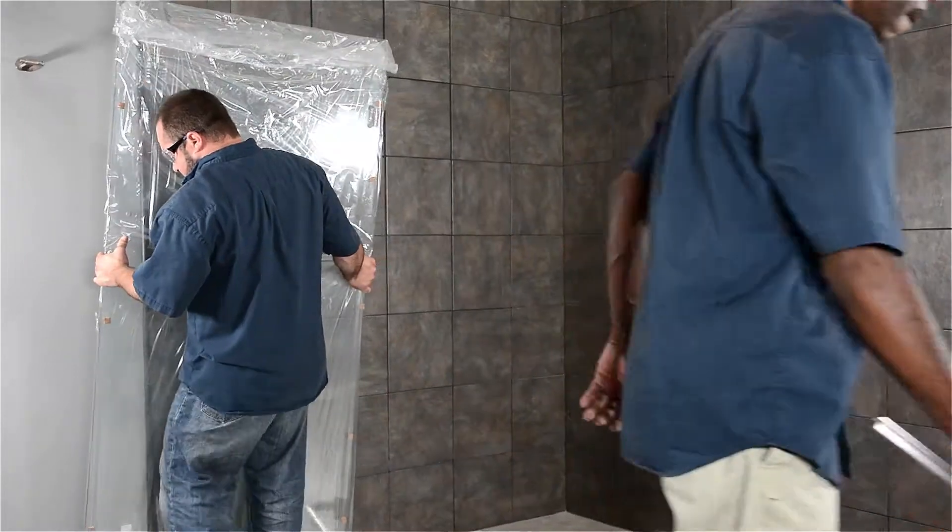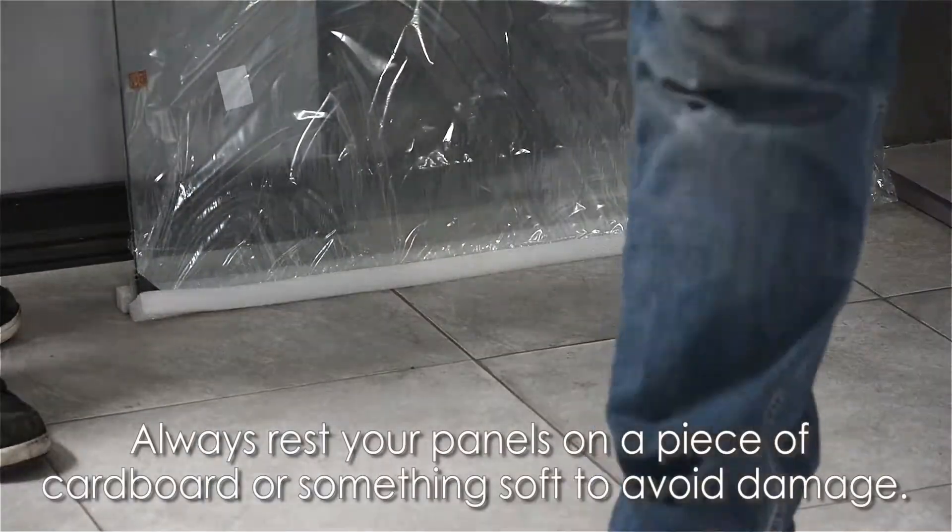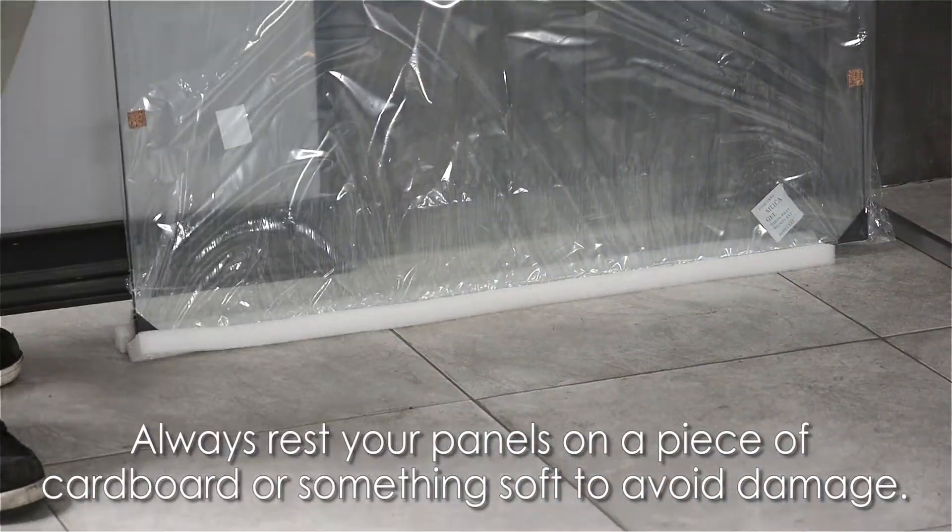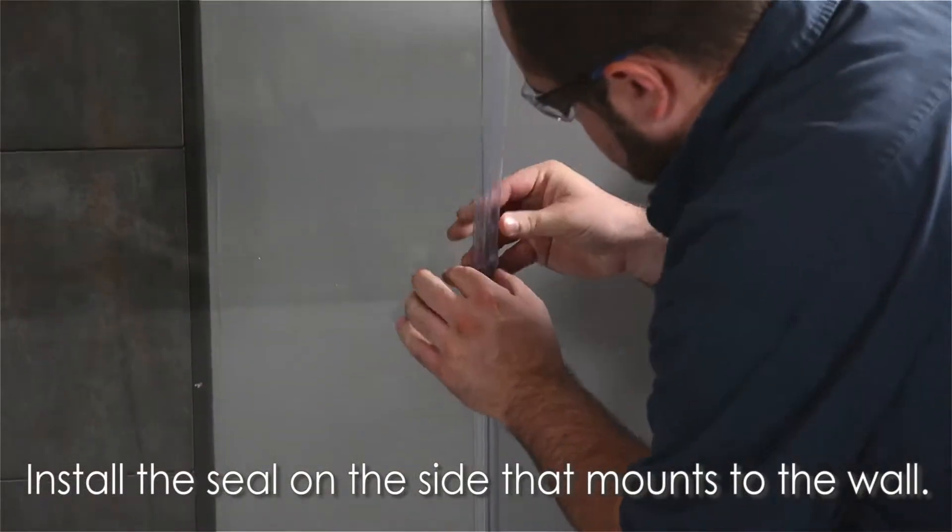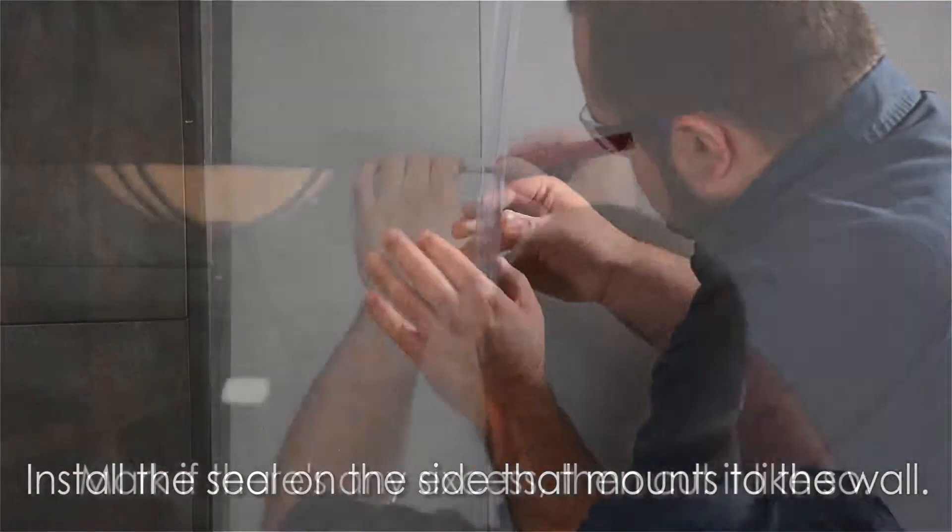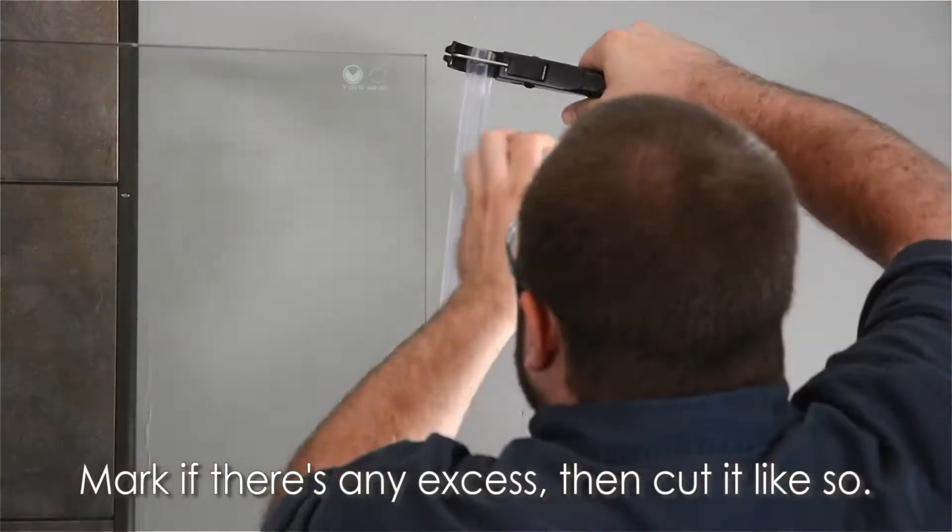Now it's time to install the side panel. Always rest your panels on a piece of cardboard or something soft to avoid damage. Install the seal on the side that mounts to the wall. Mark if there's any excess, then cut it.